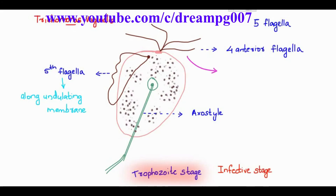With these 4 anterior flagella, trichomonas vaginalis has a twitching or jerky motility. And the center of this trophozoietic stage has a nucleus.